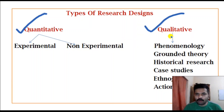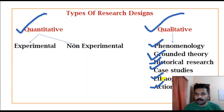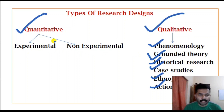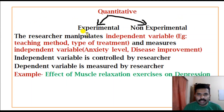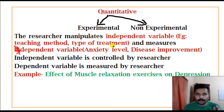Types of qualitative research include phenomenological research, grounded theory, historical research, case study, ethnographic research, and action research. I am not going to explain about qualitative research now. I am explaining about quantitative research, which consists of experimental or non-experimental research.